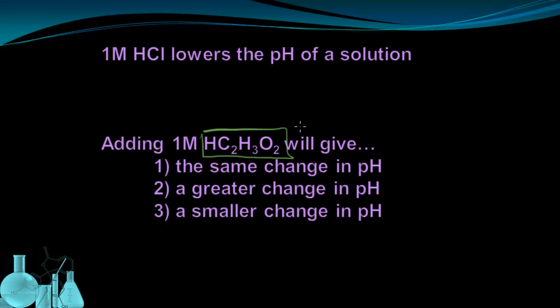And there's basically three things that could happen. The one molar acetic acid could have the same change in pH as the HCl, it could result in a greater change in pH, or a smaller change in pH. And if we write out what acetic acid is going to dissociate to, we'll see that it also gives off one H-plus ion and the acetate ion.